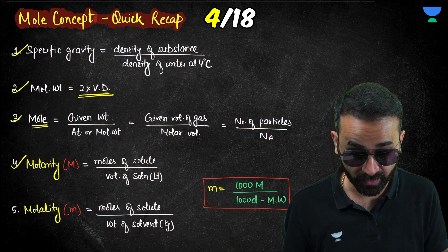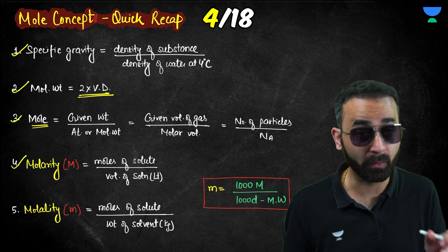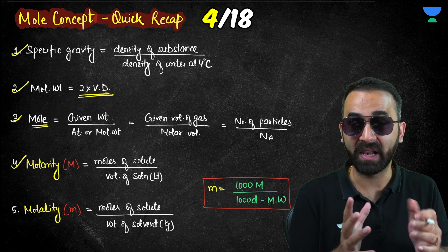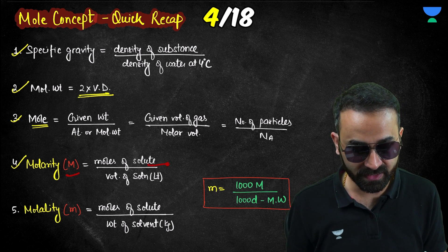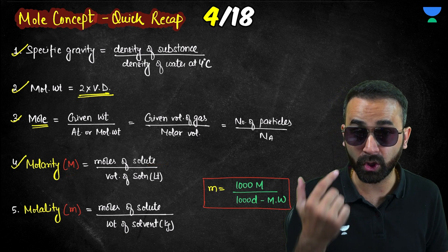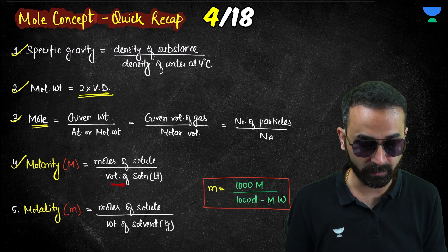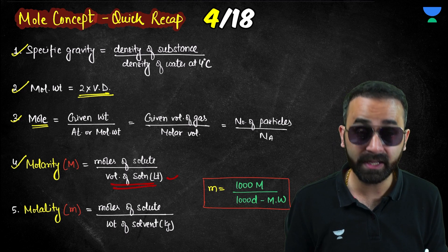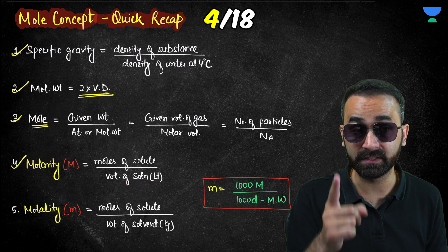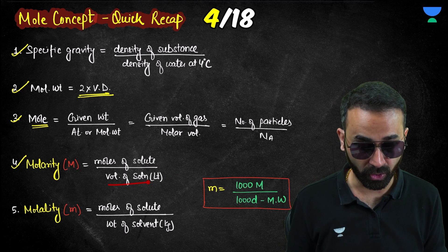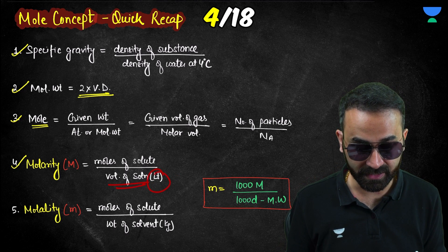The fourth formula is molarity, a very important formula denoted by capital M. Molarity is the number of moles of solute divided by the volume of solution in liters. Make sure you use volume in liters.